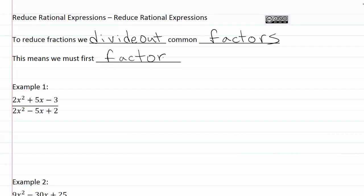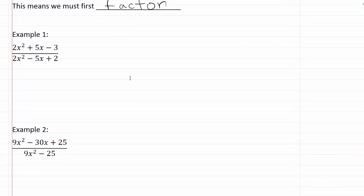So let's go ahead and take a look at a couple of examples. Example one here I've got 2x squared plus 5x minus 3, divided by 2x squared minus 5x plus 2.